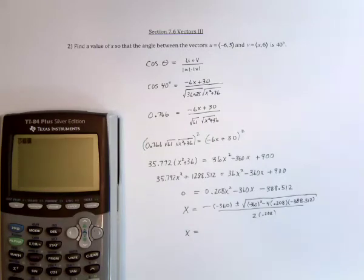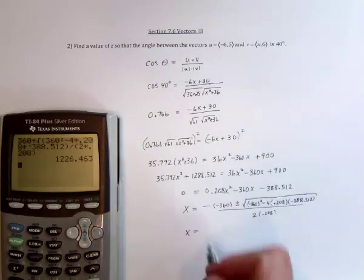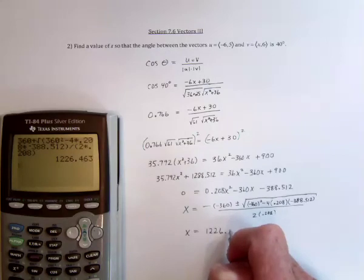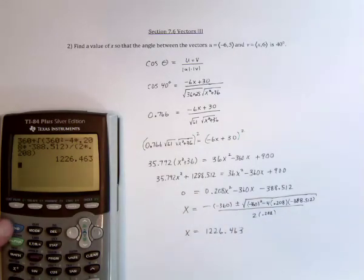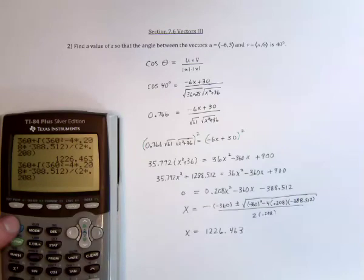And I might as well type this all in once. 360 plus the square root of 360 squared. Don't need the negative because it's going to be squared. Minus 4 times 0.208 times negative 388.512. Close the radical and divide that by parentheses 2 times 0.208. So x is equal to 1226.463, which seems fairly large. I think it's because I did not put a parenthesis at the beginning.